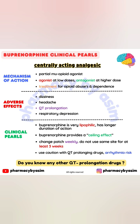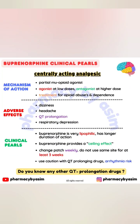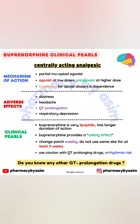Now, let's talk about some clinical pearls. Buprenorphine is very lipophilic and has a longer duration of action due to its high affinity for the opioid receptors, as compared to morphine. Because of the partial agonist activity, buprenorphine provides a ceiling effect, causing less euphoric effects and lower abuse potential than full agonists.